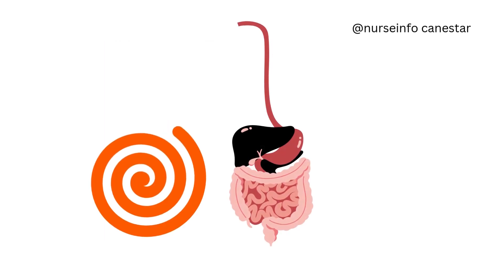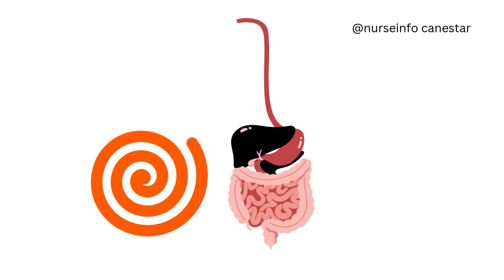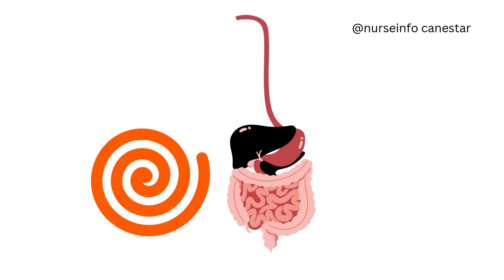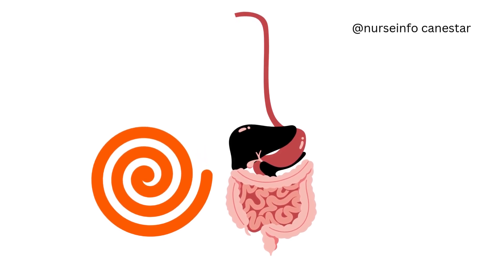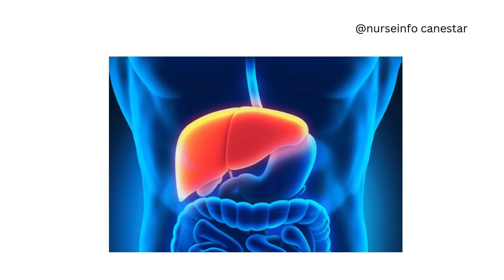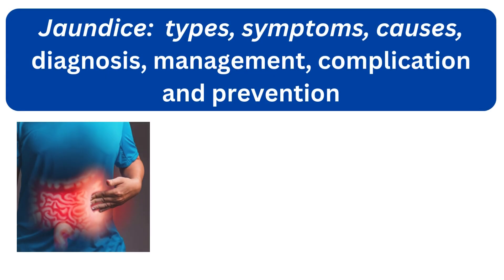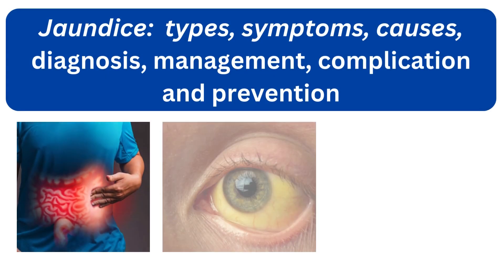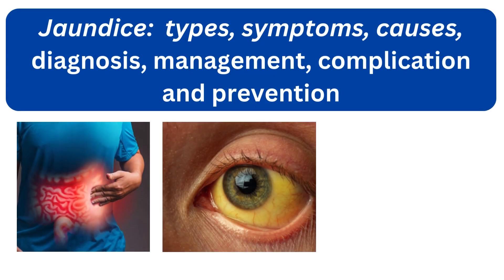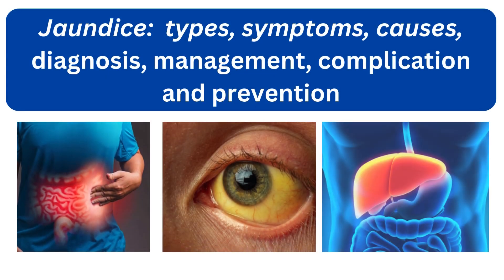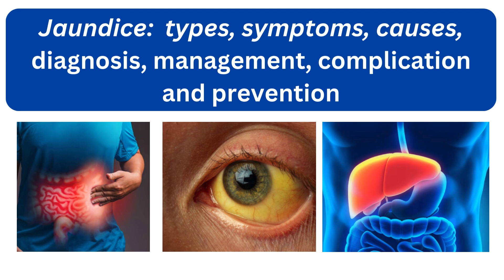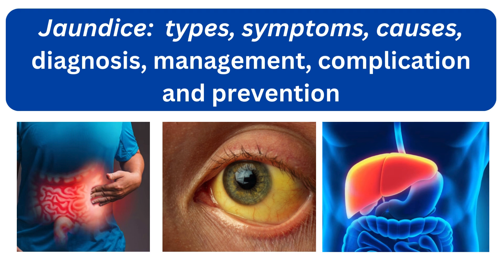What is jaundice? Jaundice is a medical condition that manifests as a yellow discoloration of the skin, mucous membranes, and the whites of the eyes, resulting from high levels of bilirubin in the bloodstream.